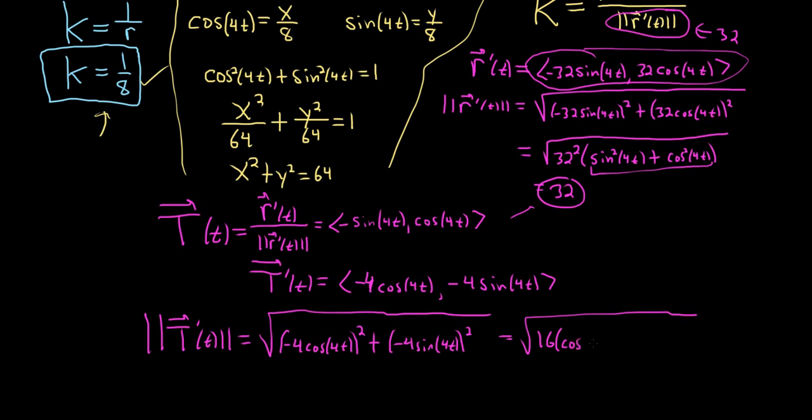So you get 16. And you can skip all this work if it's clear. I mean, it's pretty clear. So this is 16 times 1. So you just get the square root of 16. So you get 4. OK.